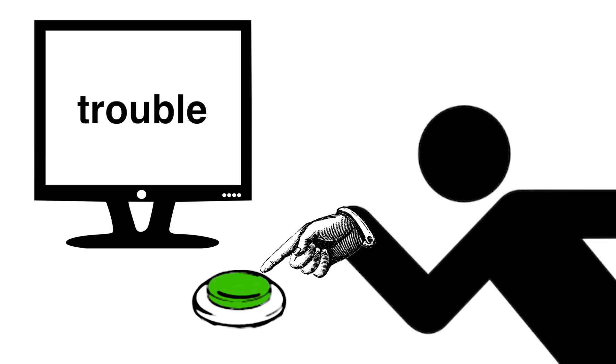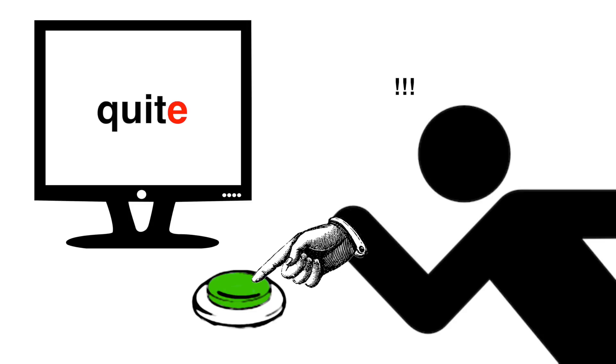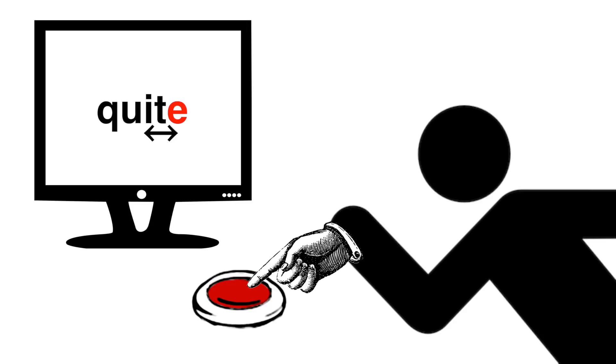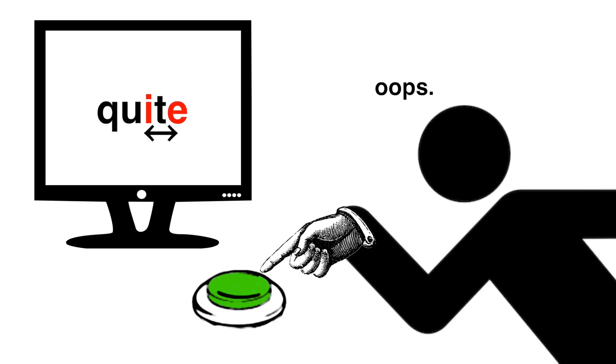But the task they used to wear people out was something called a go-no-go task. People click a button when they see a word with a letter E, but not when the E is within two letters of another vowel. So when people see an E, they have the impulse to click, but they have to suddenly catch themselves if they see another vowel nearby.